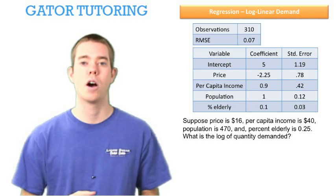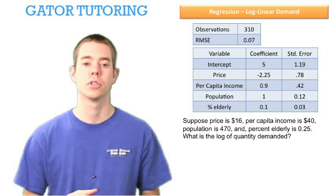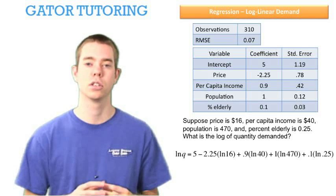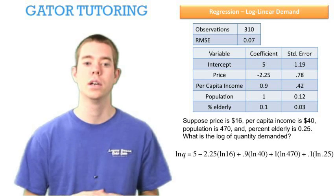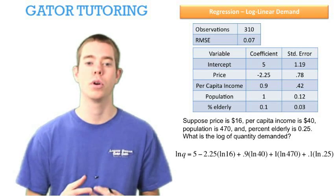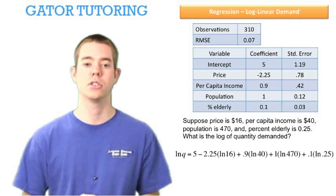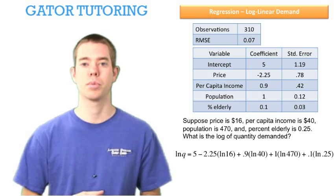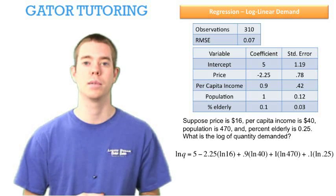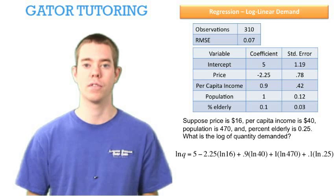All of this output in the regression is given in natural log form. So our estimated quantity is going to look like this: ln(q) equals our intercept, 5, minus 2.25, which is our price coefficient. Now this is where you have to pay attention. It's times not just the price variable of 16, but times the ln of that price variable of 16. And this is true for all of our variables.